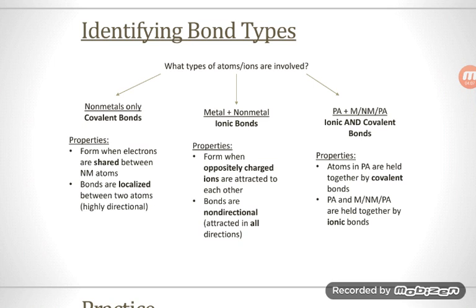One is if you only have nonmetals. If you only have nonmetals and there are no polyatomic ions in there, then those must be covalent bonds, and we can remember the basic properties of our covalent bonds.